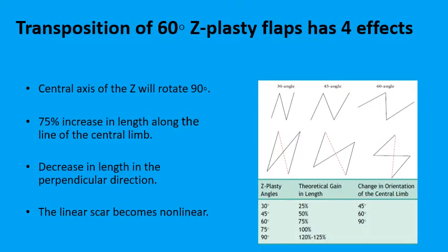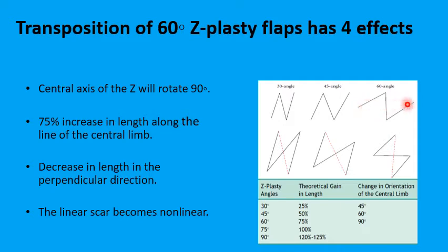These functions of the Z-plasty are dependent on the angle of the Z. The higher the angle, the more lengthening effect the Z-plasty will have on the scar. Taking the 60-degree Z-plasty, which is the most common form, a 60-degree angle can increase the length of the original scar or defect by 75%, and the new central limb will lie perpendicular to the original — a 90-degree rotation of the scar.